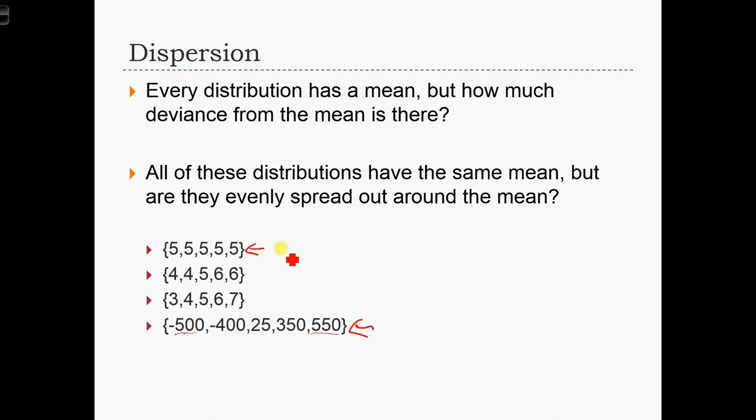So going from the first to the last data set here, we see increasing levels of dispersion. Intuitively, I think you can see that that's true. But what we are going to do is go over a few statistics that allow us to quantify, to put a number to the amount of dispersion there is in a data set.